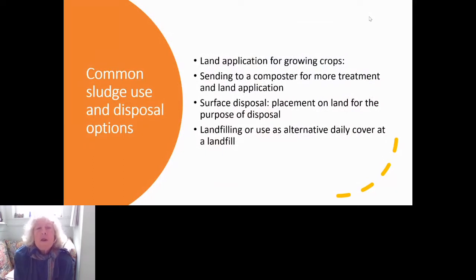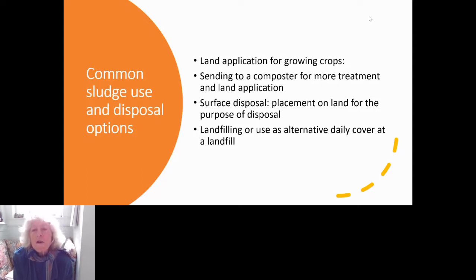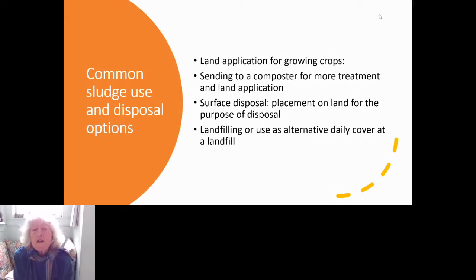There are several options for disposing of sewage sludge and septage. One is land application for growing crops — where you have a specific crop in mind, such as alfalfa or wheat, and apply the sewage or septage for growing it. Another option used by many facilities is sending sludge to a composter who treats it further, then land applies it. Surface disposal means putting sludge on land for the purpose of disposal, not for growing crops.